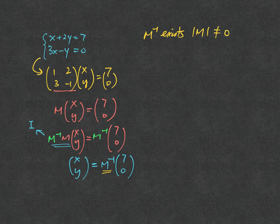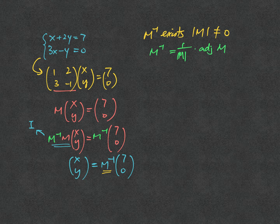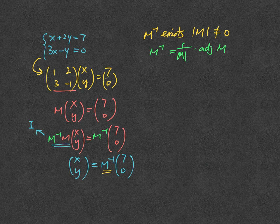A simple reason would be because M inverse will be equal to 1 over determinant of M multiplied to the adjoint of M. So in order to make sure that M inverse exists, determinant of M cannot be 0, or else it goes to an error.